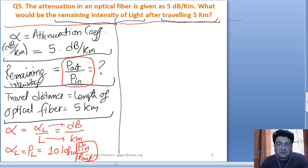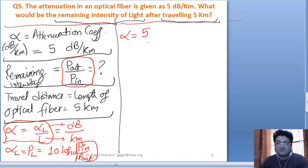What are we given? We have been given alpha as 5 dB per kilometer and L as 5 kilometers. So we can find out alpha L.